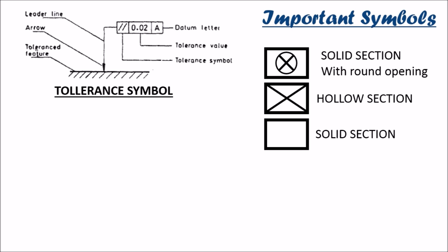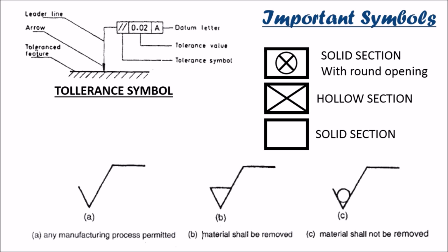Now coming up to the sections. The solid section with the round opening is represented as solid section with a circle in a cross and hollow sections over the diagonal bars and solid section is represented as simple plain figure. Coming up to the manufacturing processes symbols. Simple under root represents that any of the manufacturing processes permitted either you can add the object or you can remove the object. Under root signature with a V sign, closed material shall be removed from it and under root signature with a circle over it, material should not be removed.